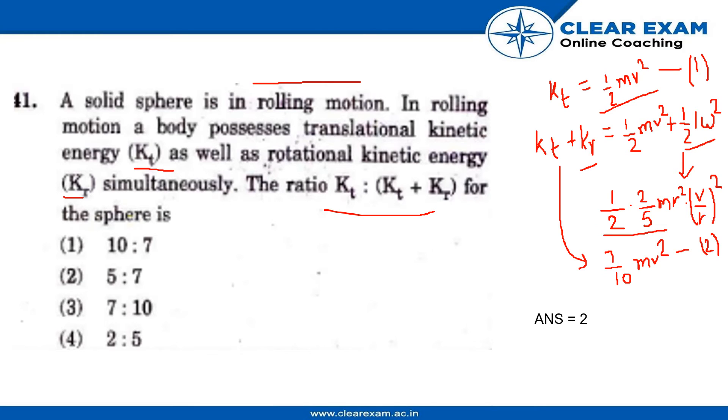Now as we have to find the ratio of Kt to Kt plus Kr, so by adding half m v squared to the value of Kr, we are getting Kt plus Kr to be 7 by 10 m v squared.